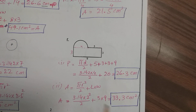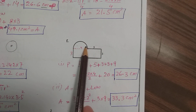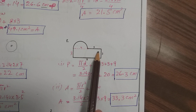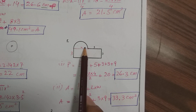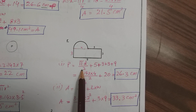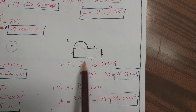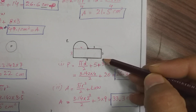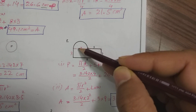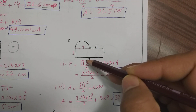In part f, the complete shape consists of a semicircle and a rectangular part. To find the perimeter, we take the semicircle arc as pi d divided by 2, plus the straight edges. The diameter d equals 4, because the complete length is 9 and the remaining part after subtracting 5 is 4. So 4 plus 5 gives the total value of 9.